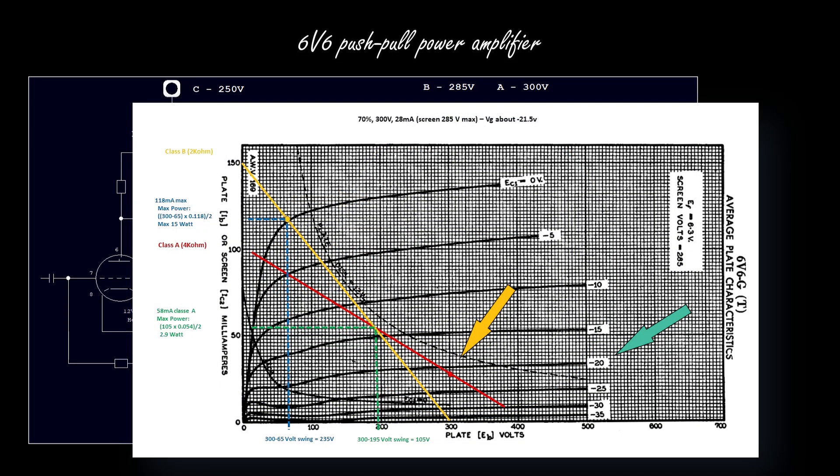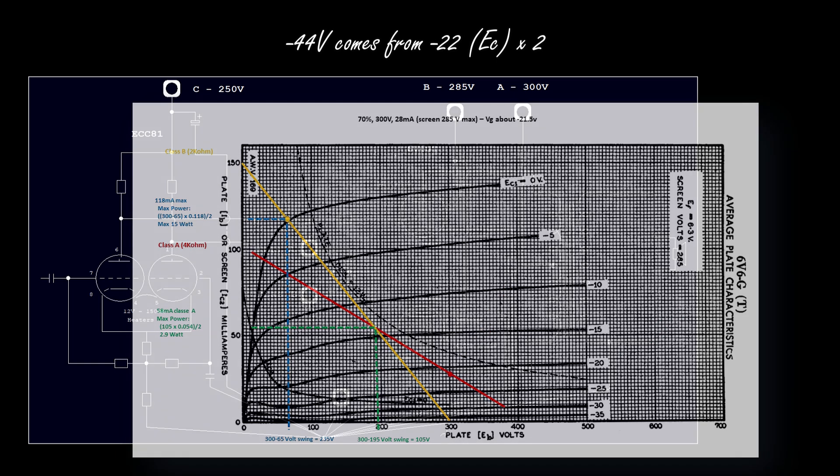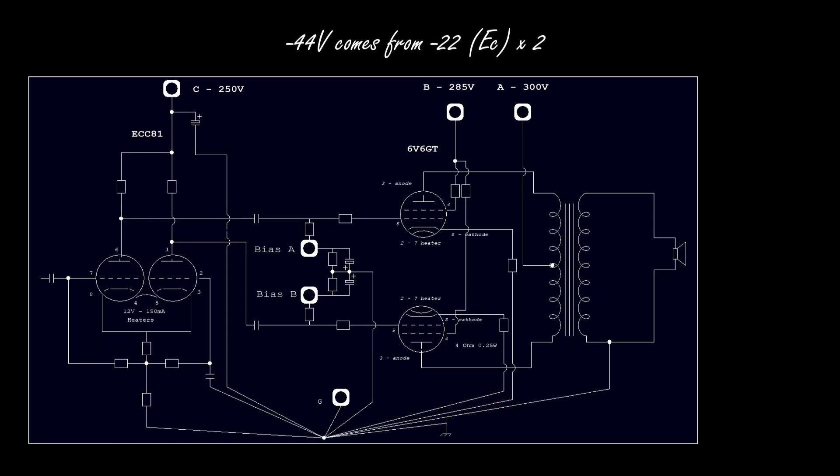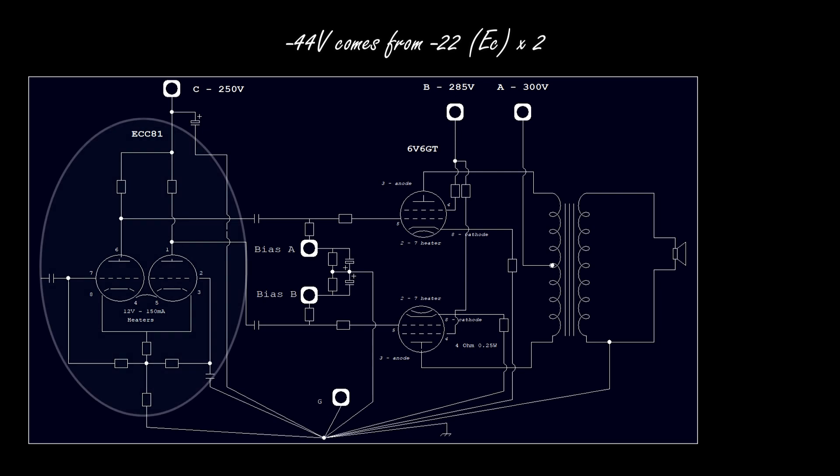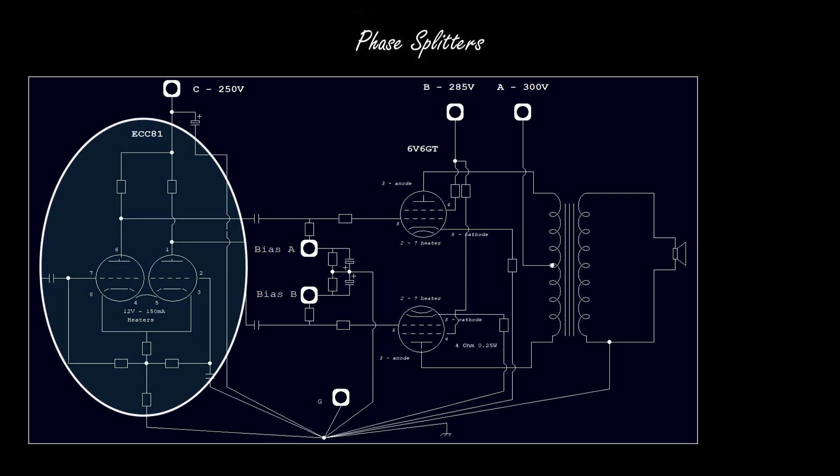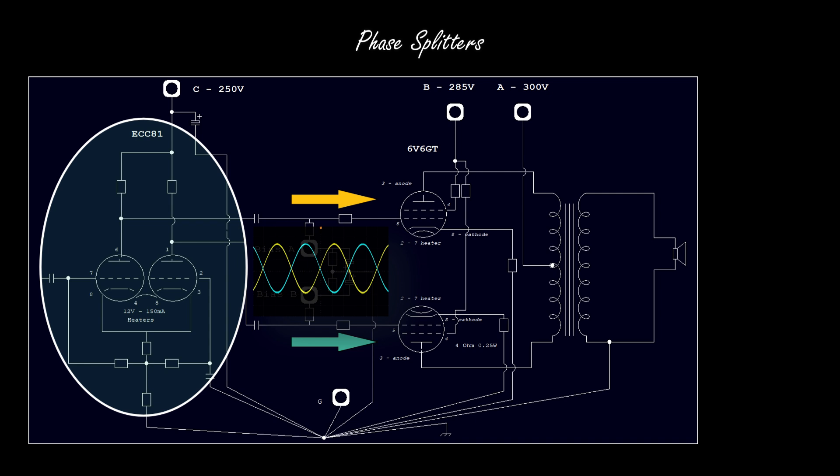This is the input voltage to the push-pull power tube stage which drives the stage to maximum power. Then we analyzed several designs for the phase splitter. The role of the phase splitter stage is to provide two versions of the same signal to the power tubes stage.